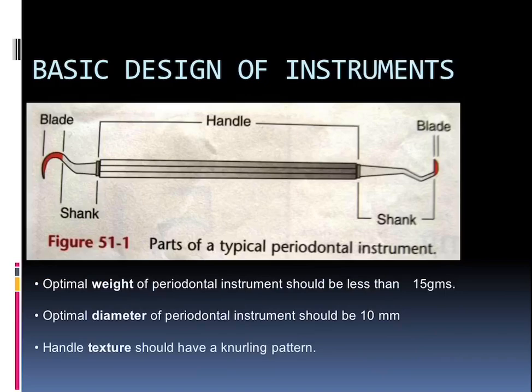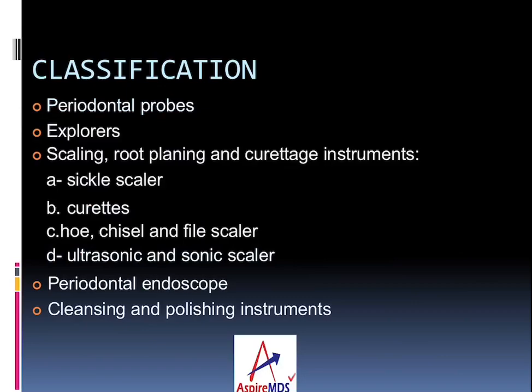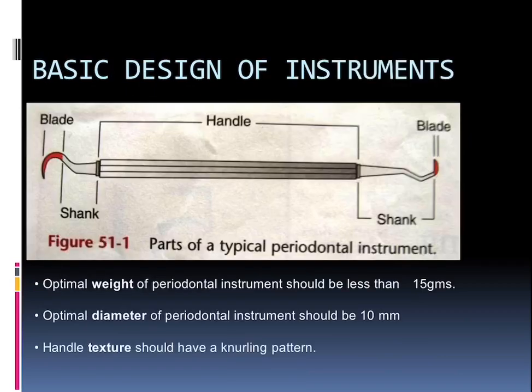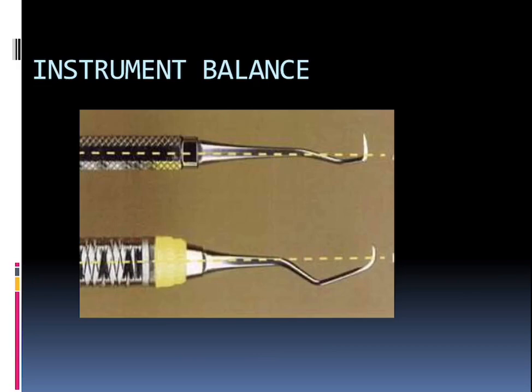If we talk about the basic design of any instrument, it has parts like the blade — that is the working end — which is connected to the handle by the shank. The shank can be either normal, extended, or shorter in strength as per the requirement. The optimal weight of any periodontal instrument should be less than 15 grams for better handling. The optimal diameter should be 10 mm, not more than that. The handle texture should have a knurling pattern for better grip, and the instrument balance should be such that we do not slip and damage normal tissue.